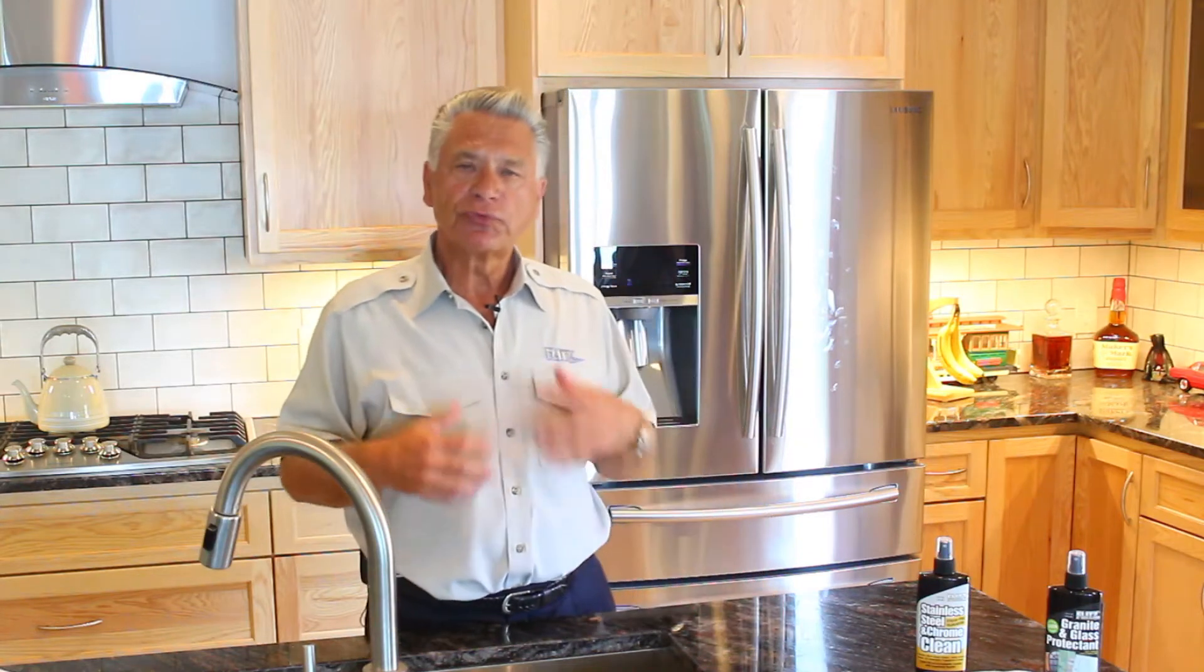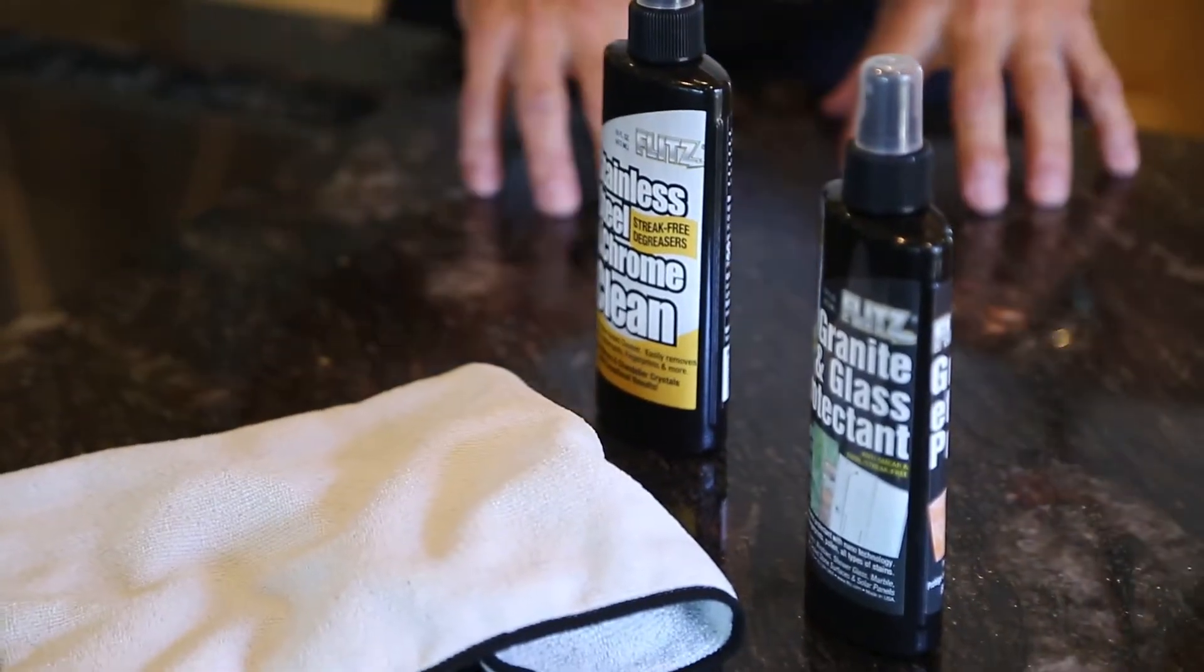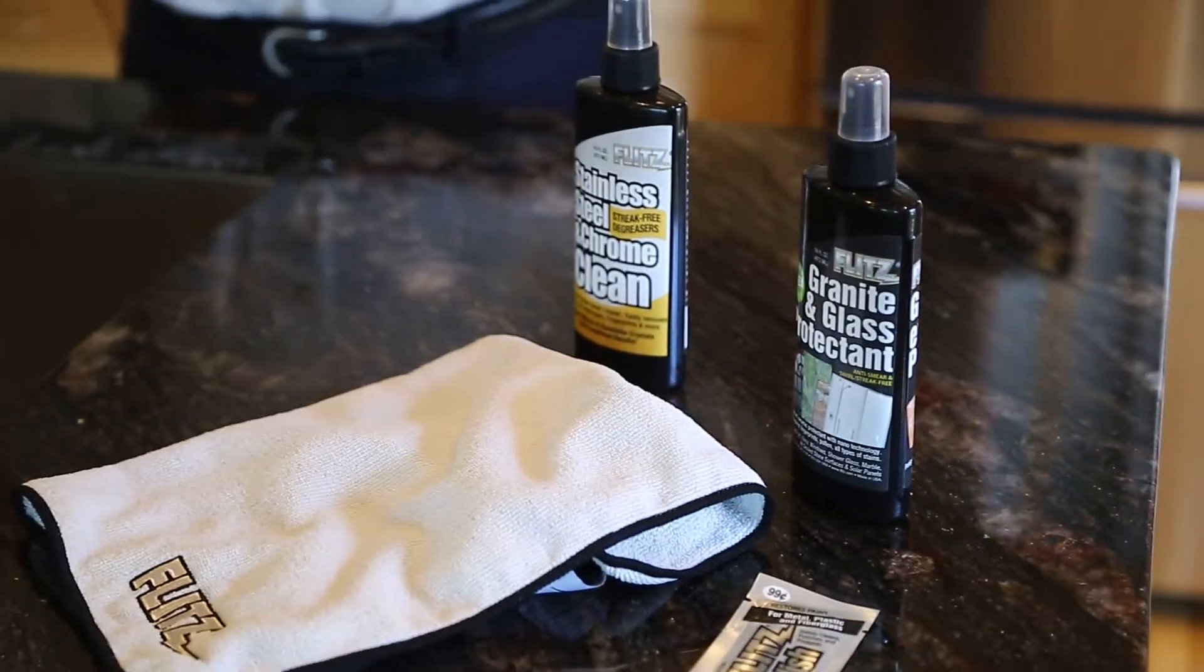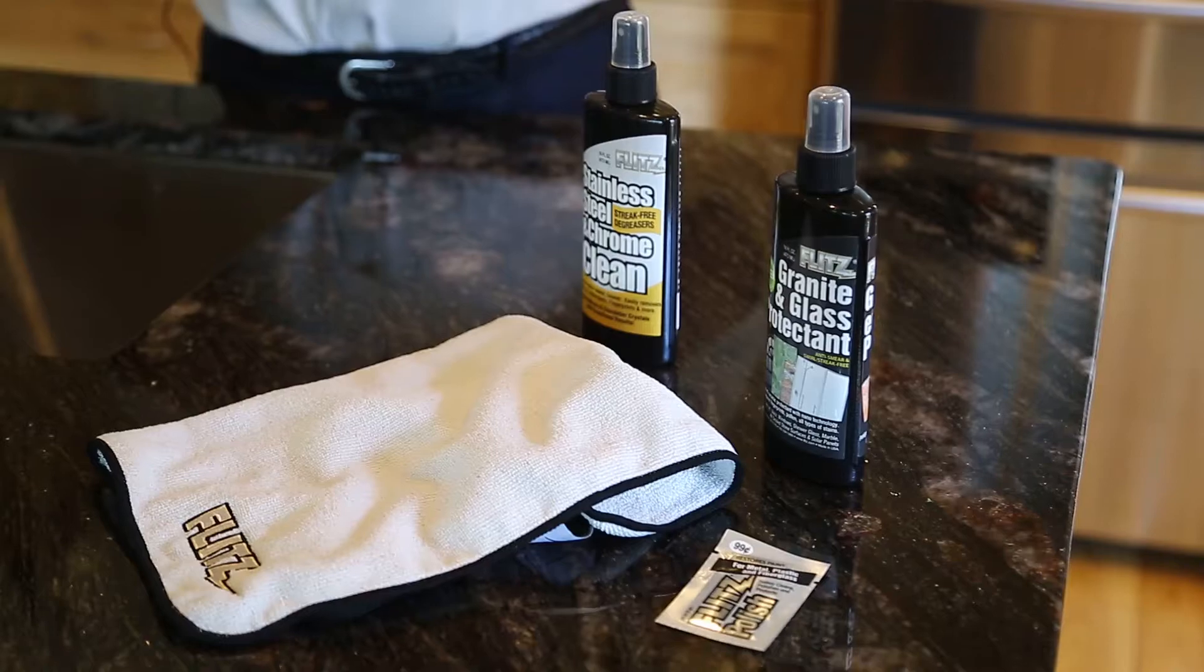Hi, I'm Oli from Flitz. For 42 years, Flitz has been manufacturing products for metal polishing, fiberglass, plastics, and paint. Now we're starting to make products for the household industry. And all these products are designed to clean, polish, and protect.